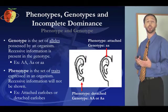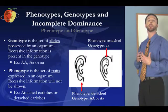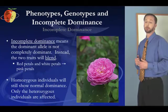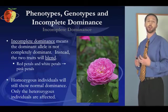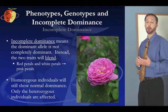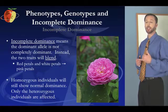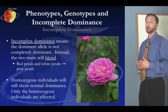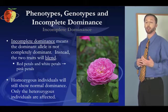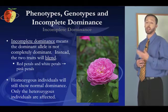Understanding the difference between those two terms is really important because the exam will often ask things that test your knowledge of what they mean. Now there are some rare cases where dominance is not complete. Incomplete dominance means the dominant allele is not completely dominant — instead the two traits basically blend. So with red petals and white petals, red petals may be dominant but because of incomplete dominance we end up with pink petals.